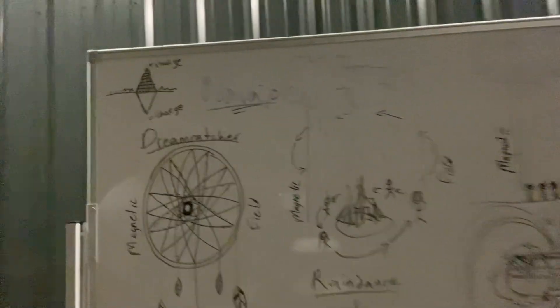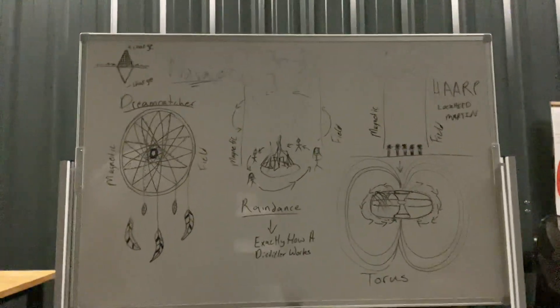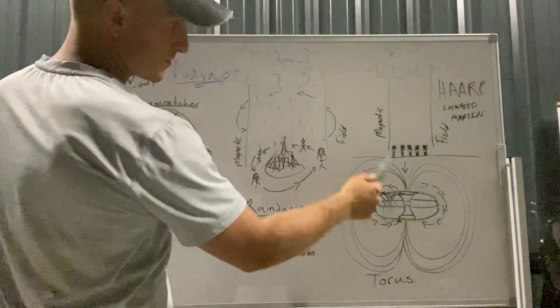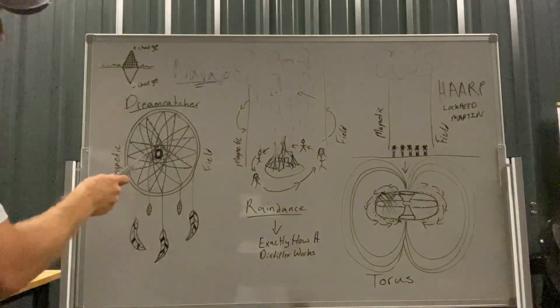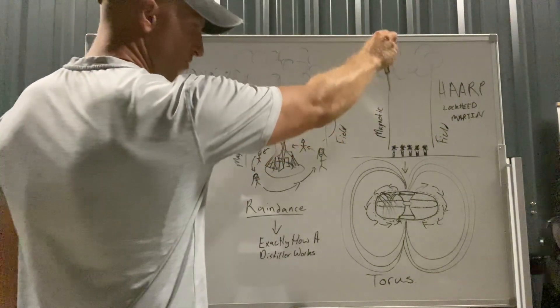Let me go forward so you can see it. So you've got your fire, everyone's going around the fire, vortex comes up, condenses, comes back down as distilled water—hence your rain dance. All right, cool. Now what is a dream catcher?